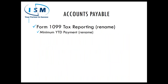The biggest piece that really happened in accounts payable: it used to be called Form 1099 E-Filing and Reporting. Sage partnered with AATRIX to provide 1099 forms and W-2 printing in the system. Sage has now rebranded that name to Form 1099 Tax Reporting — they dropped the E-Filing and Reporting piece. Also on the payments screen, the field previously labeled 'minimum year to date' has been renamed to 'minimum year to date payment.'